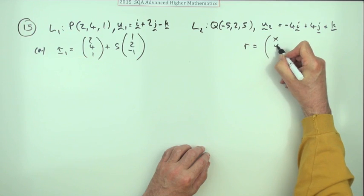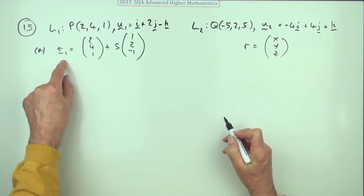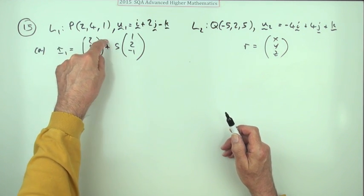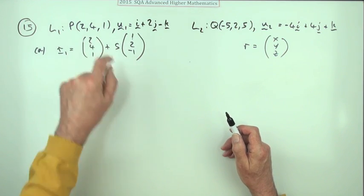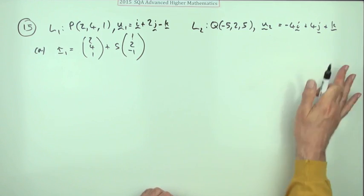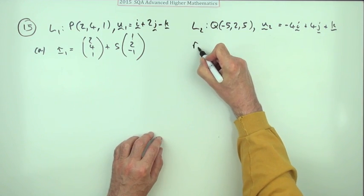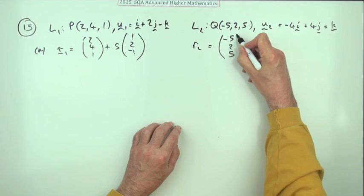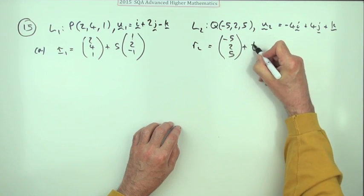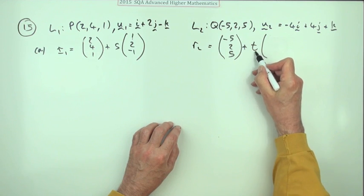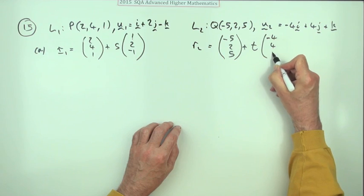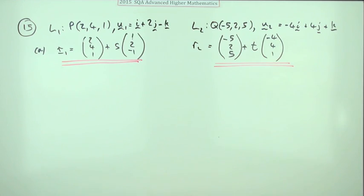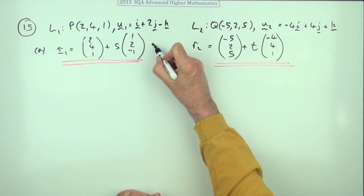Given that r equals (x, y, z), that means x equals 2 plus s, y equals 4 plus 2s, and so on. For L2, you start at the point (−5, 2, 5) and use t for the parameter, taking t steps in the direction (−4, 4, 1). You get a mark for each equation.